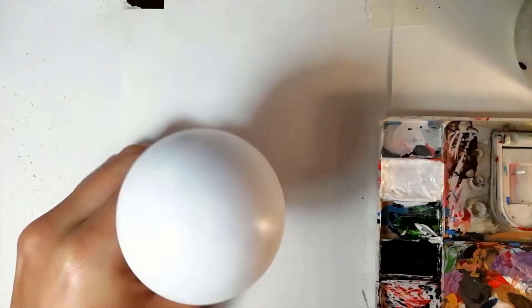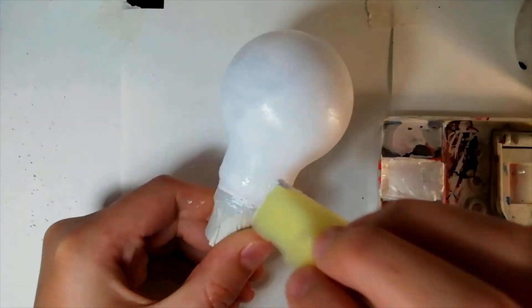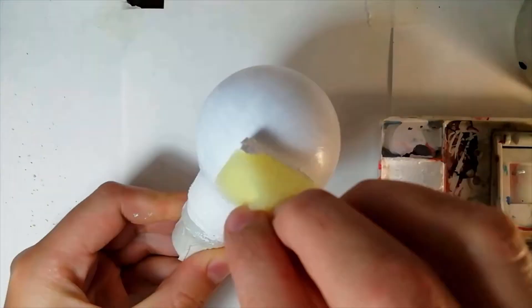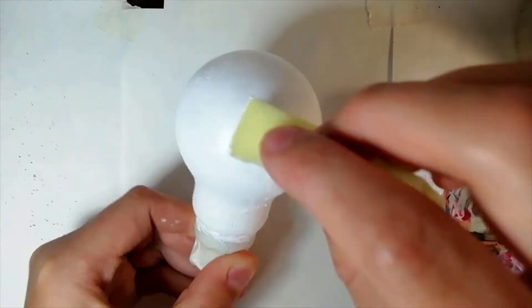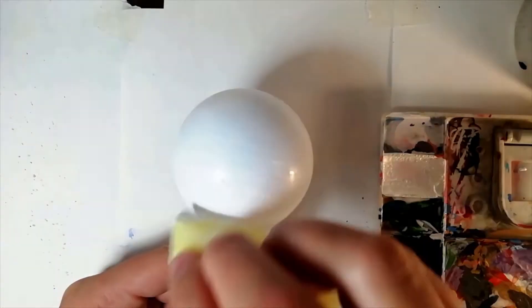One tip I can give you for mastering the first few layers is to make sure you do not mix too much water into the paint, as otherwise it won't stick to the glass very well. You also need to make sure each layer is completely dry before adding the next, because it could disturb the lower layers if the paint hasn't fully dried.